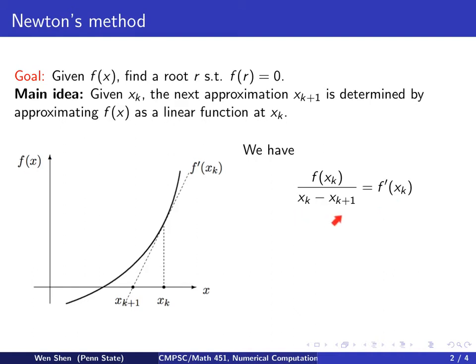Rearrange terms here, solve this with respect to xk plus 1, and we immediately get the following. x at k plus 1 equals to xk minus f of xk over f prime of xk.